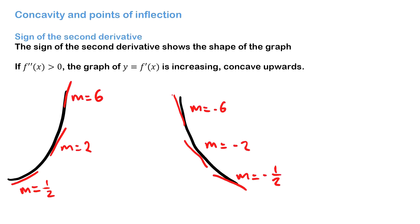In this video we're looking at concavity and points of inflection. We're focusing on the second derivative, and the sign of the second derivative shows us the shape of the graph. If the second derivative is greater than zero, we know that the graph of the first derivative is increasing, and the shape of the overall graph is concave upwards.